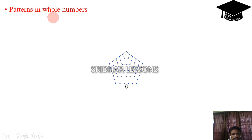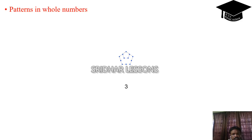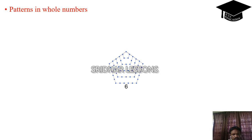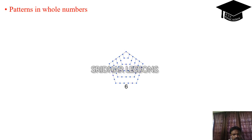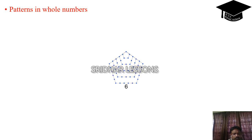We will see the pattern in whole numbers. Observe this picture carefully — it is following some pattern. First one dot, four dots, eight dots, and so on. If we link these dots one with another, it is going to follow a picture pattern.